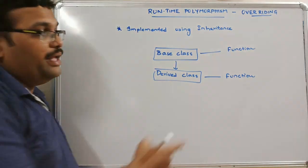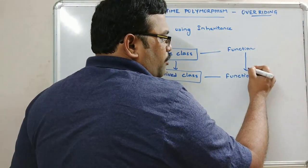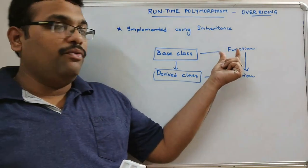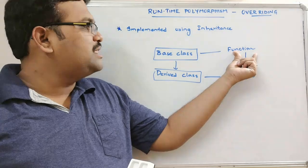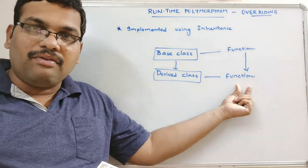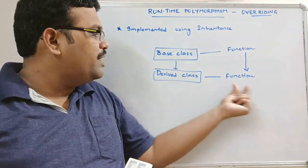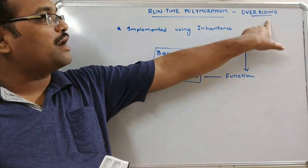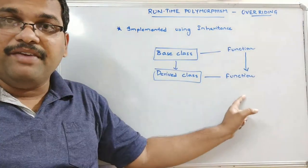In overriding, the same function that is written in the base class is overridden in the derived class. The same function is implemented in a different way in the derived class — both functions are the same but the logic will be different.